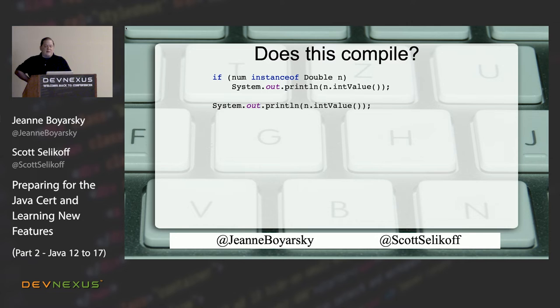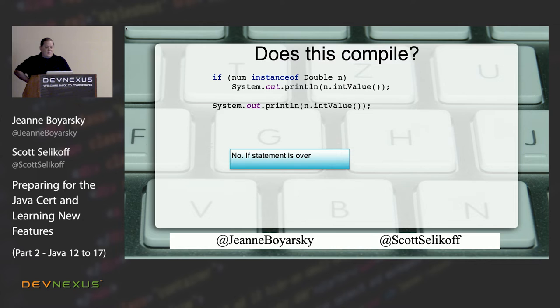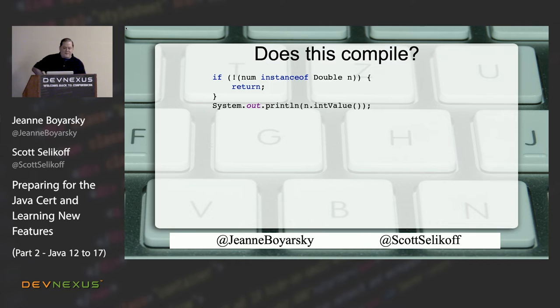Does this code compile? Most people shaking their heads — correct, it does NOT compile. At the point where the last line is being executed, the compiler doesn't know whether n is a Double or not. If it knew for certain, it would allow it, but it does not know.